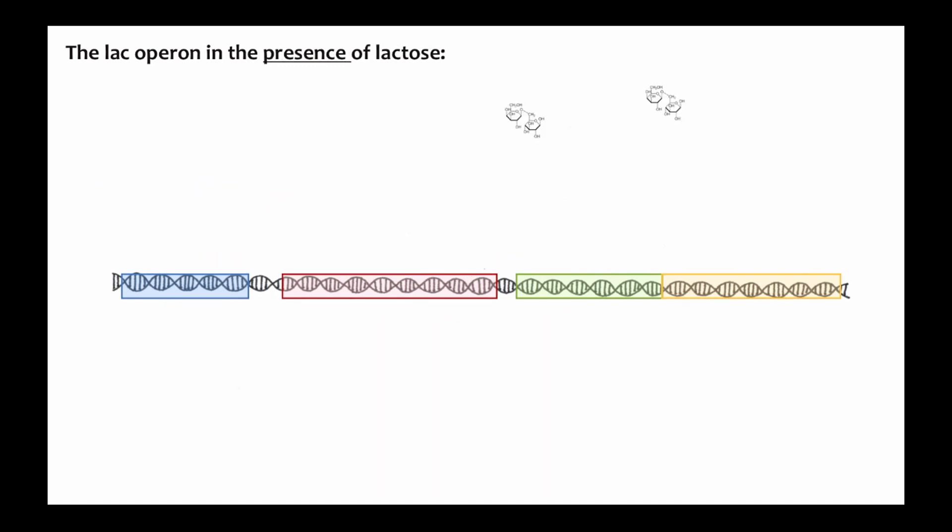Okay, but what happens when a bacterial cell is in the presence of lactose and needs to use lactose as an energy source? When lactose is in the environment, there is a bit of a derivative of lactose in the cell called allolactose, another disaccharide. Again, the lac I gene is transcribed and translated, but it binds to the allolactose.